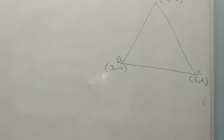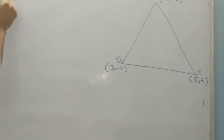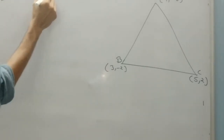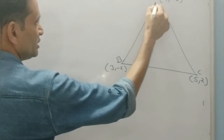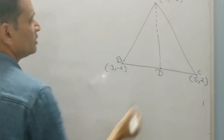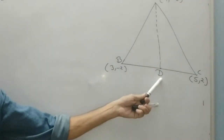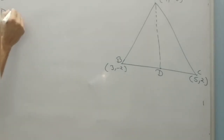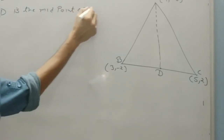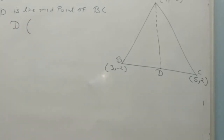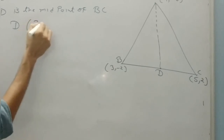Now the last question of the exercise. We have studied in class 9 that the median of a triangle divides it into two triangles of equal area. If triangle ABC is given, we have to prove that the median divides it into two equal areas. Let us draw AD as median of triangle ABC. If AD is the median, D will be the midpoint of BC.